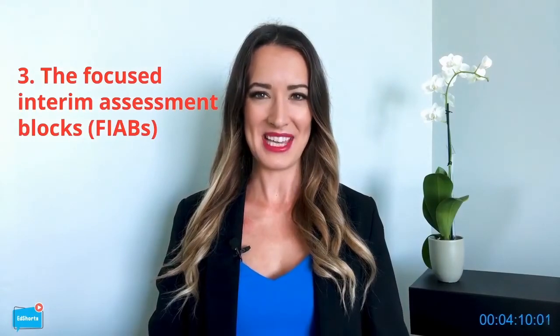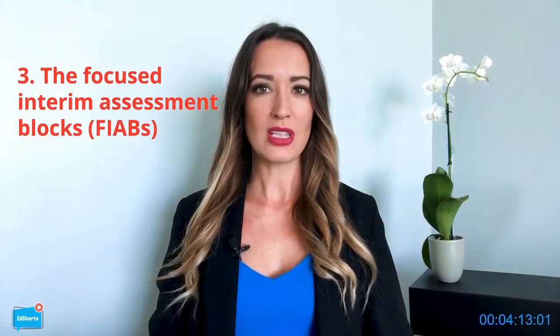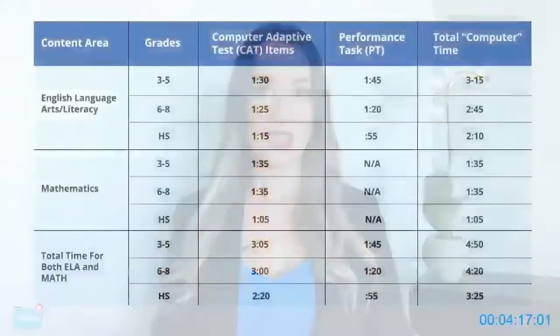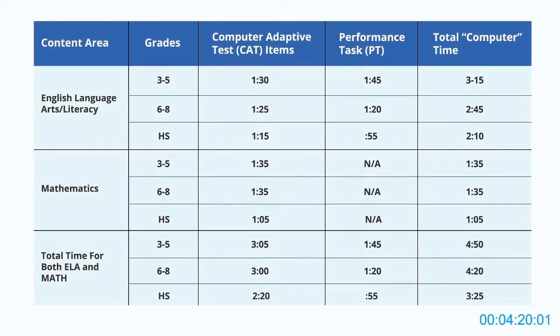The Interim Assessment Blocks, or IABs, are claim-level tests that help teachers assess students in the classroom periodically per their planned curriculum. These evaluate at least four to eight targets and provide domain-level overviews. The Focused Interim Assessment Blocks, or FIABs, assess three or fewer targets focused on instruction in about a week typically. Students have up to five opportunities to take the ICAs, each IAB, and each FIAB throughout the school year. All these Interim Assessments are untimed. The ICAs, IABs, and FIABs are Fixed Form Tests, meaning all students attempt the same items, and a student who takes an Interim Assessment more than once will see the same items each time.